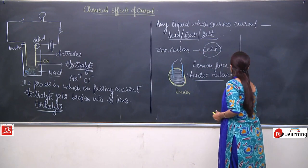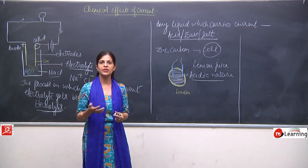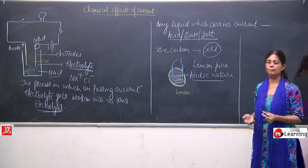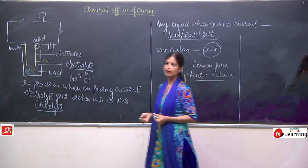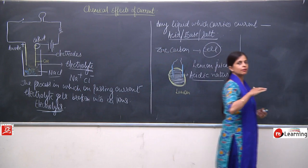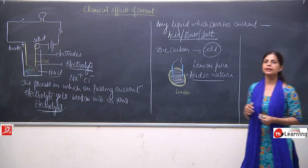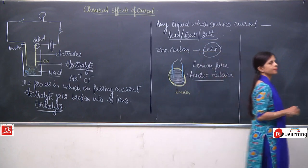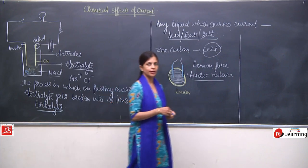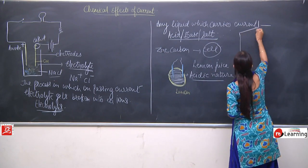Now we will talk about the next example. We can also see the chemical effect of the current — we will take a potato and divide it into half, make a cut, and the circuit will be made. We will also talk about the magnetic effect of the current.